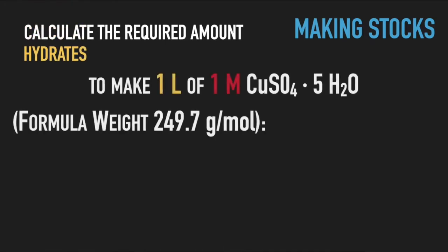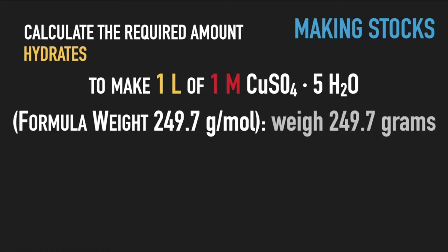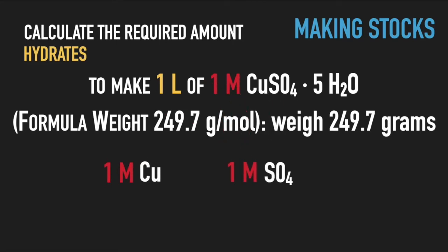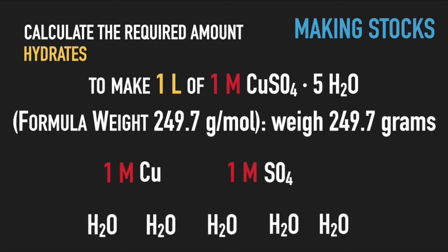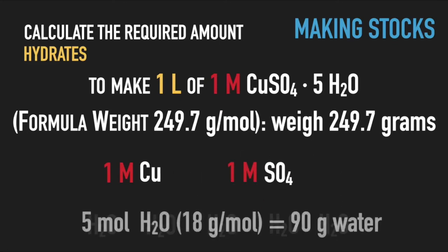For hydrated compounds, you need to use the corresponding formula weight and take into account the amount of water released upon dissociation. For example, 1 mole of copper sulfate pentahydrate, which corresponds to 249.7 grams, when dissolved, dissociates to 1 mole of copper cations, 1 mole of sulfate, and 5 moles of water, which contributes 90 grams of water to the final volume of the stock.